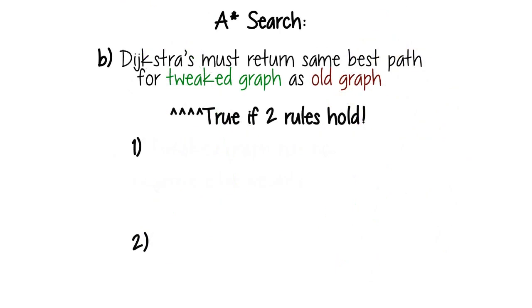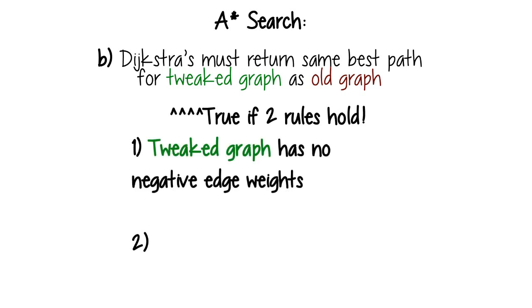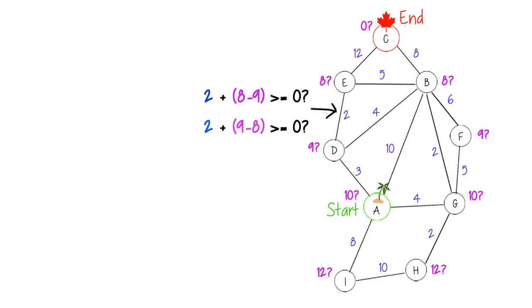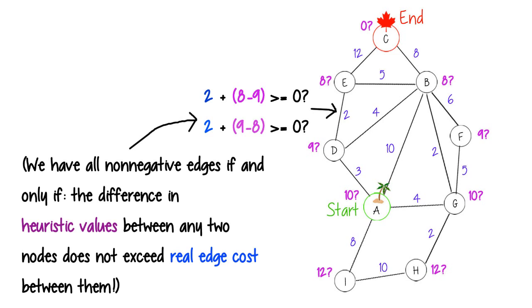First, it doesn't have negative edge weights. As we know, that would just break Dijkstra's. Making sure that doesn't happen for any edge may seem kind of tricky, but as we'll see in a bit, it's actually not too hard.